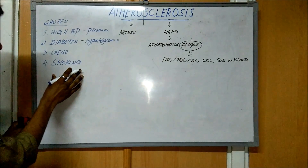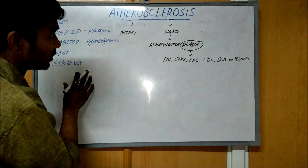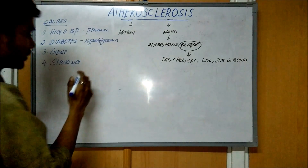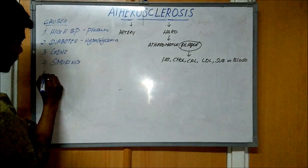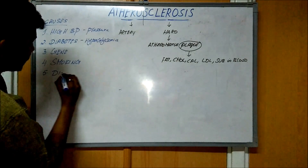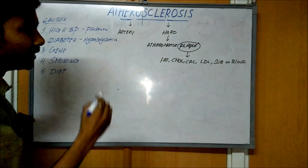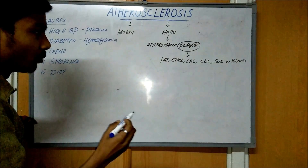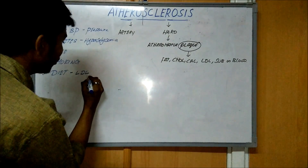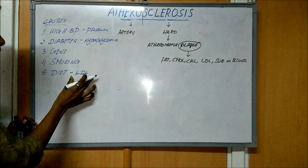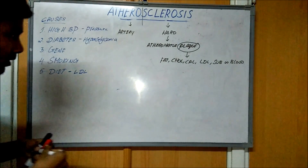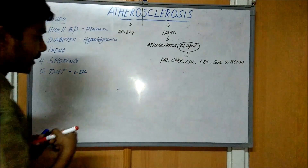In diabetes, there is a release of some toxins into the blood which cause damage to the artery walls and lead to atherosclerosis. Regarding diet, we mainly need high density lipoproteins. If the patient is taking more LDL — low density lipoproteins — it makes damage to the artery walls and leads to atherosclerosis.